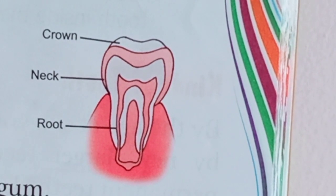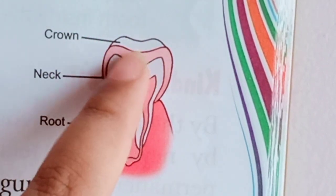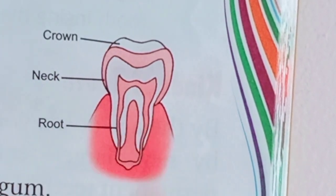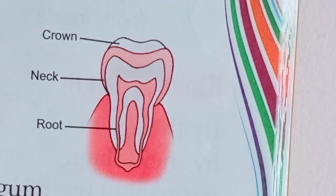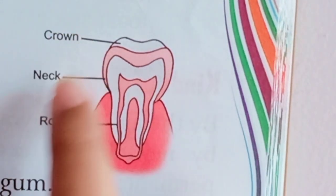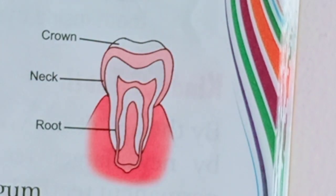Now let's go on to the parts of a tooth. This is the diagram of the parts of a tooth. The white part you can see is the crown — it is the part of the tooth that is seen above the gum. The neck is the pink part — it lies between the root and the crown. The root is the part of the tooth inside the gum. We can't see the root or the neck; we can see only the crown, the white part.